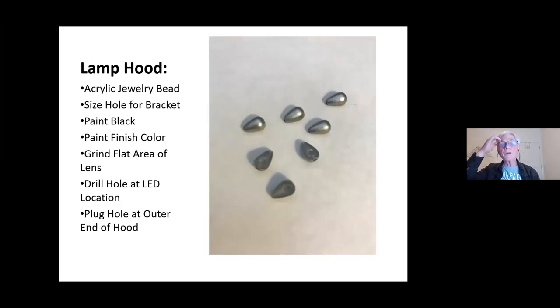So the lamp hood, there's a variety of ways of doing these. I wanted something that was kind of fairly typical. And what I found to work the best was this kind of tear drop shape bead, and this is acrylic. It's got a hole through the middle of it because as a jewelry bead, it's designed for being put on a string or on a wire.